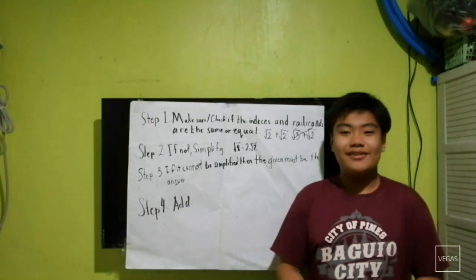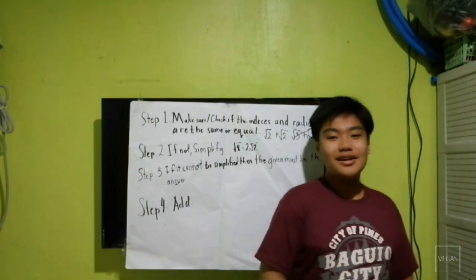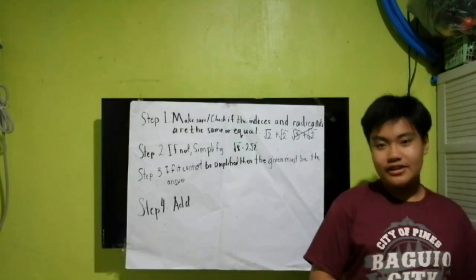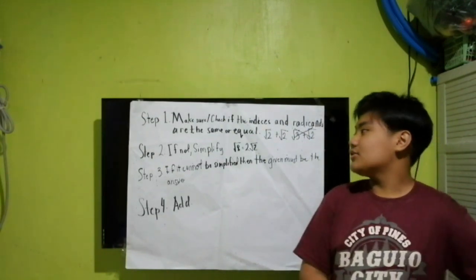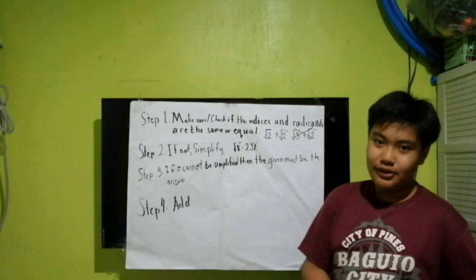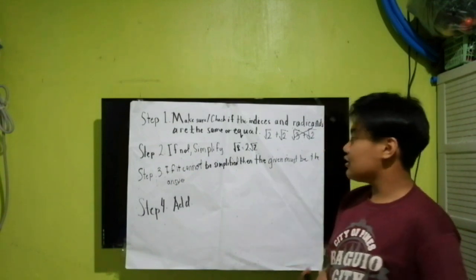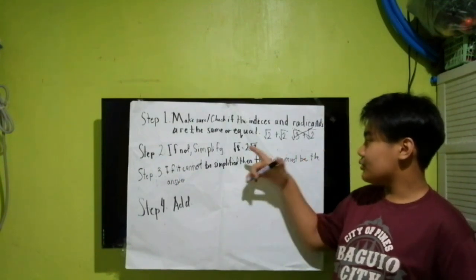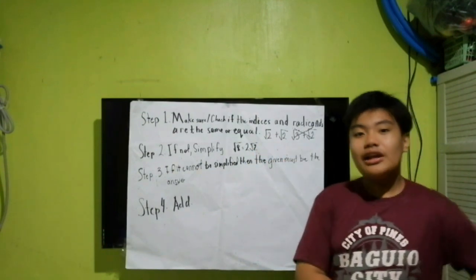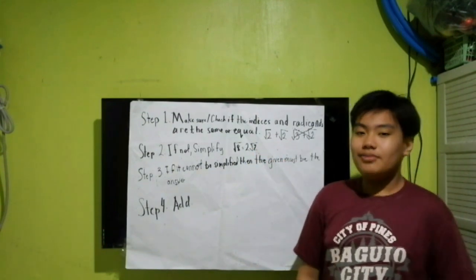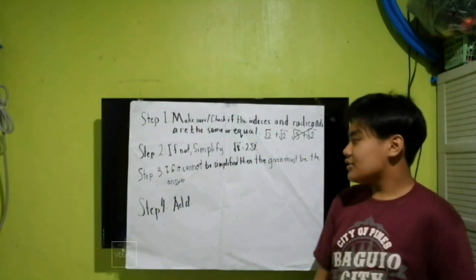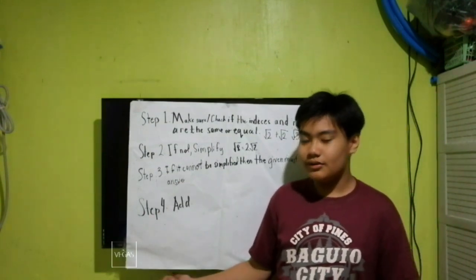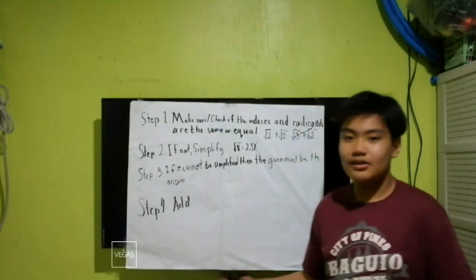Steps in adding radicals. Step one: you should make sure or check if the indices and the radicands are the same or equal in value. Such as root 2 plus root 2 — you can add this to make 2 root 2. But you cannot add root 3 plus root 2.